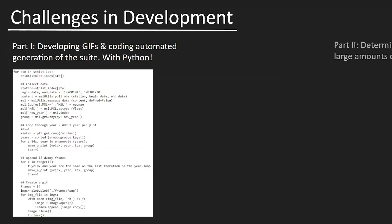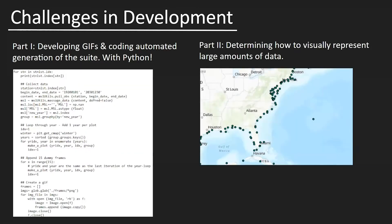Challenges in development: the first challenge was how are we going to make animations for all 146 stations? We accomplished this by automating the script, as you can see in the screenshot here. Our second challenge was determining how to visually represent large amounts of data. We accomplished this by converting point data and using scaled symbology to represent regional trends over time, then adding the animations to the water-level station attributes.